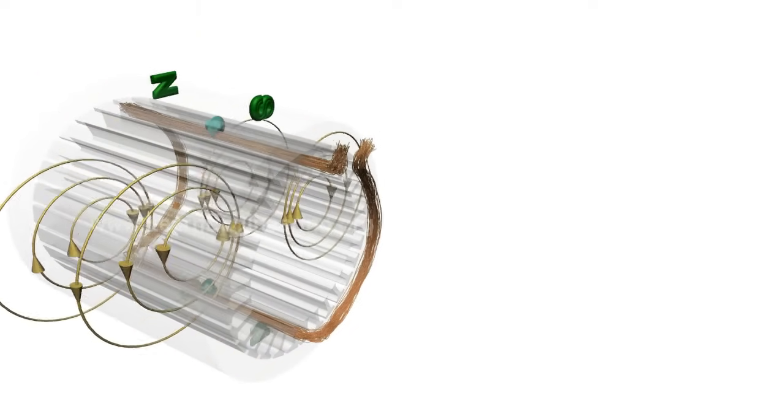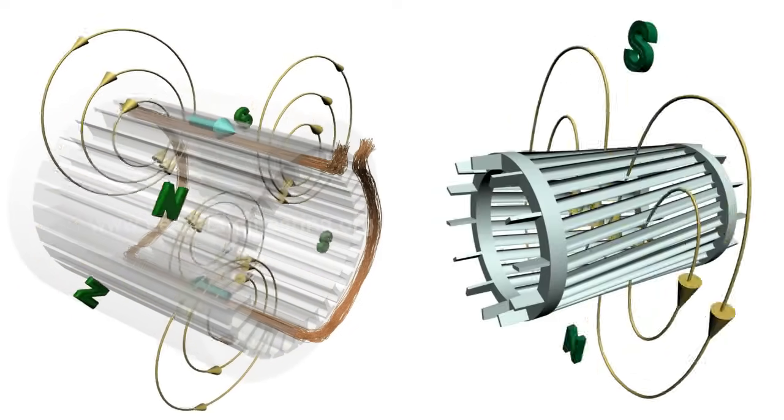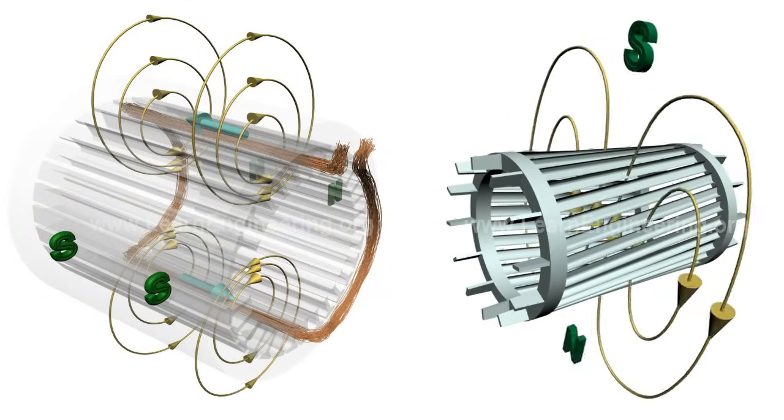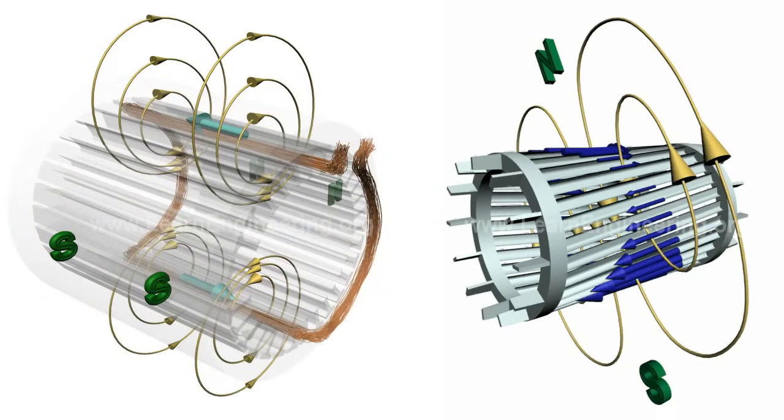Effect of rotating magnetic field on rotor is interesting. Since magnetic field is varying, electricity is induced in rotor bars due to electromagnetic induction. So here is a situation where current carrying bars are immersed in magnetic field.